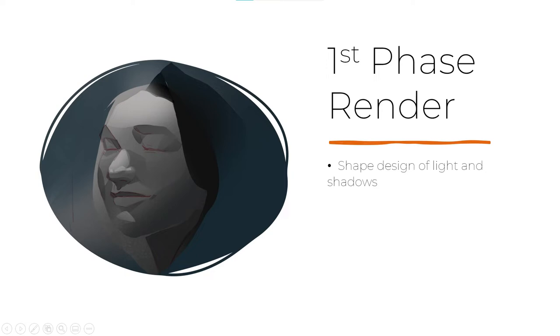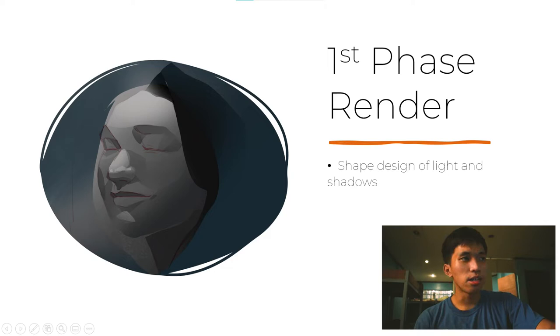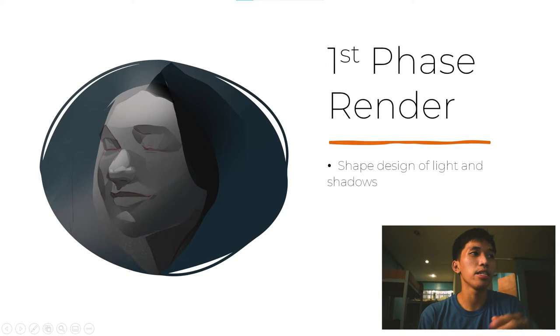Sa second stage, ito na — ang tinatawag ko ay yung first phase of my rendering. Dito ina-apply ko yung shape design. Nagde-design ako ng shapes ng lights and shadows — hindi basta-basta nagpa-brush through ng light color for lights or dark color for darks. May shape design po akong ginagawa. Yung shape design ko, nagde-design ako ng shape na may flow — tumadaloy, may harmony ng shapes. Kung makikita ninyo, wavy yung mga shapes, and somewhat angular. Ganun yung style ko sa pag-design ng shapes.